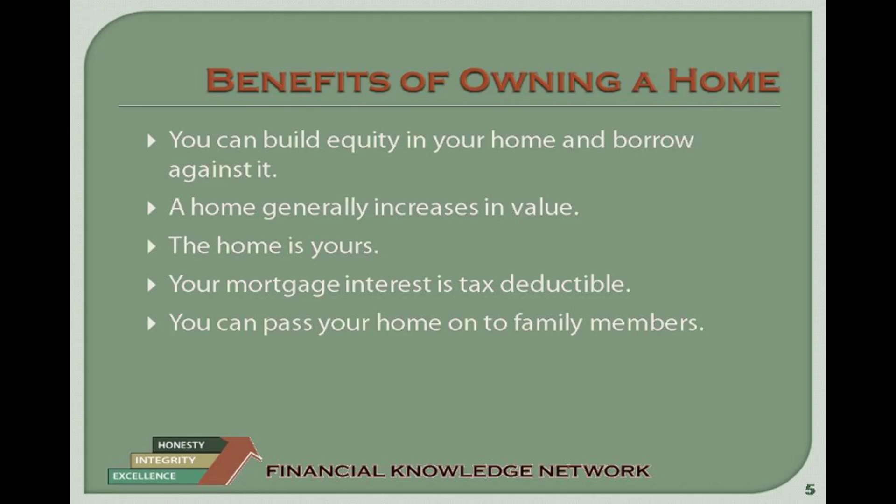Lenders usually require the PITI — that's Principal, Interest, Taxes, and Insurance — or your housing expenses to be less than or equal to 25% to 28% of your monthly gross income. Lenders call this the Front End Ratio. Lenders usually require housing expenses plus long-term debt to be less than or equal to 33% to 36% of your monthly gross income. Lenders call this the Back End Ratio. Long-term debt is outstanding debt with a remaining term of more than 10 or 11 months, and can include student loans, credit cards, car loans, and other non-housing expenses. If your debt-to-income exceeds these ratios, talk to your lender about your options.